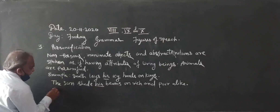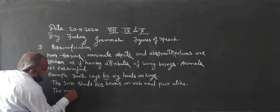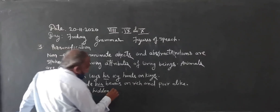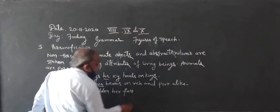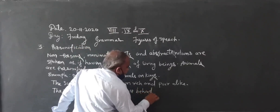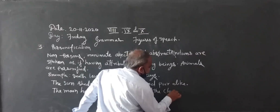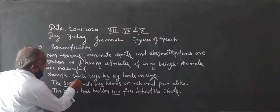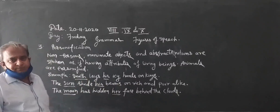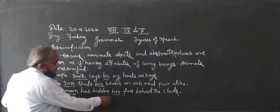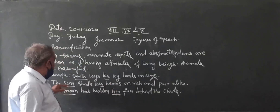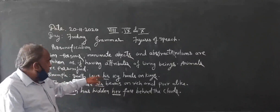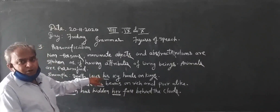This sentence is personified. Another sentence: 'The moon has hidden her face behind the clouds.' When we use 'her face,' the moon is personified. Sun, death, and moon are all lifeless things. But moon is soft, so the female pronoun 'her' is used. Sun is hard, so 'his' is used. Death is hard, so the masculine pronoun 'his' is used.